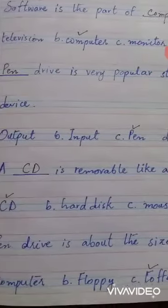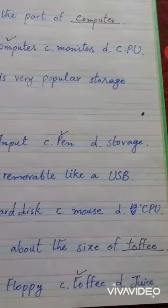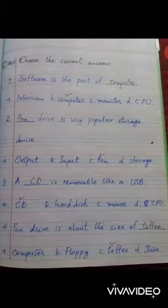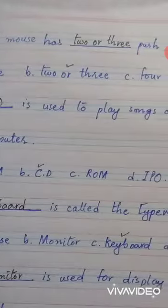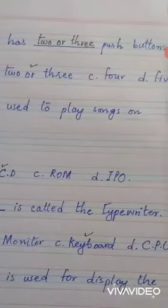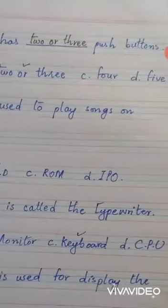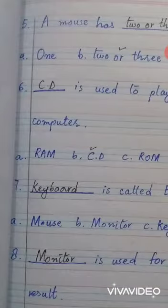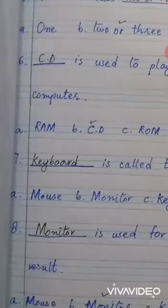Options are computer, floppy, toffee, juice. Answer is toffee. Number five: a mouse has dash push buttons. Options are one, two or three, four, five. Answer is two or three.